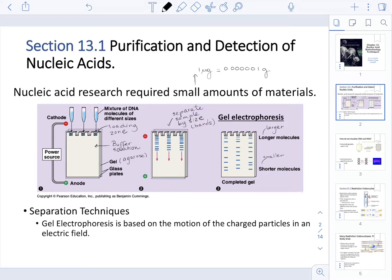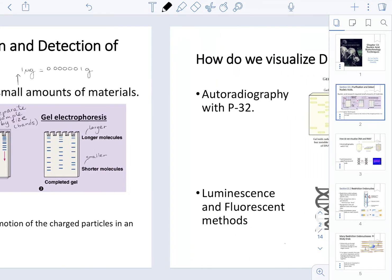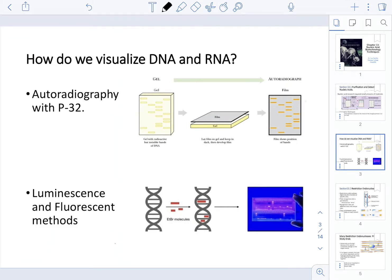Once we're done with gel electrophoresis, we need to find ways in which we can visualize nucleic acids. So there are two specific techniques that we are going to be covering when it comes to visualized DNA. The first one is autoradiography with P32.